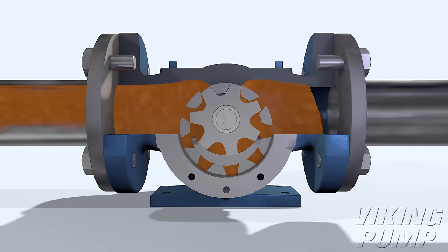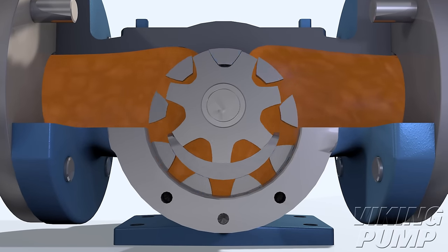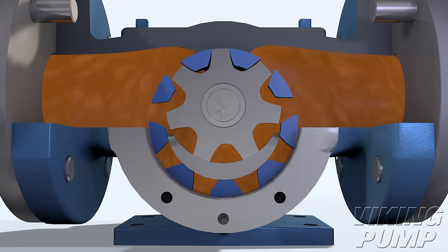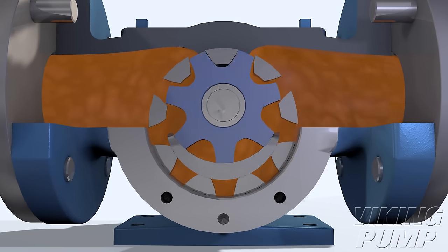Liquid enters the suction port between the teeth of the rotor gear, the larger exterior gear, and the idler gear, the smaller interior gear.